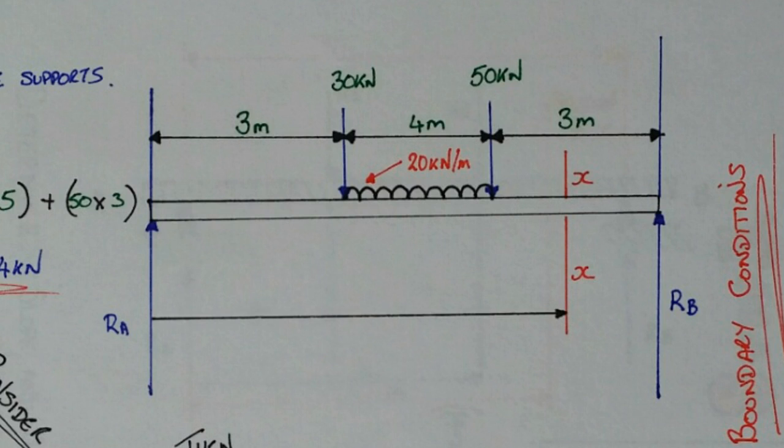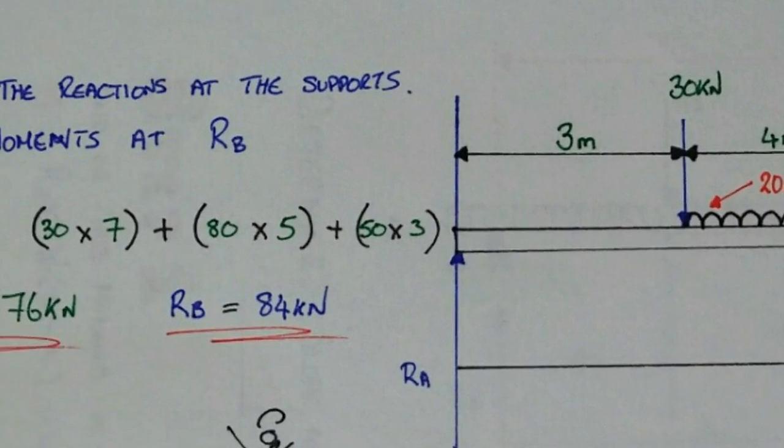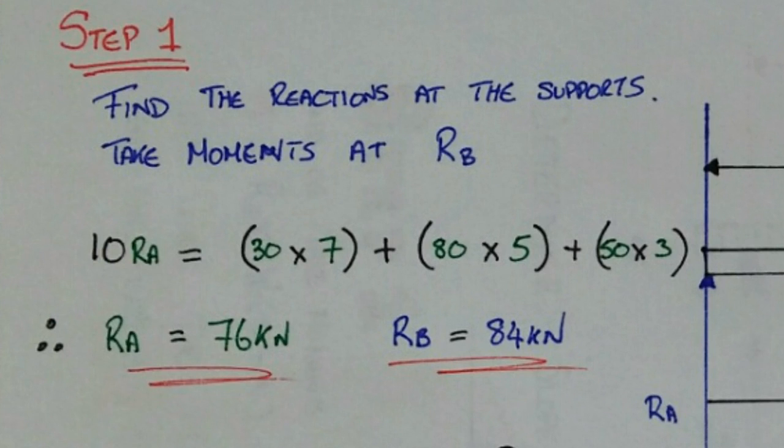So what we have to do is find the reactions at the supports by taking the moments about RB. So you got 10RA equals 30 times 7 plus 80 times 5 plus 50 times 3. You have the left hand end 76 kilonewtons, right hand end 84 kilonewtons.